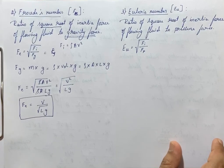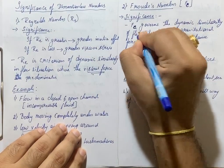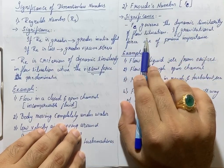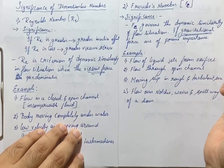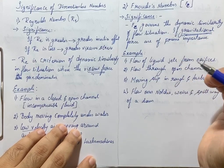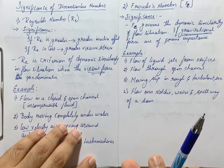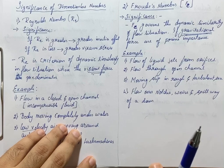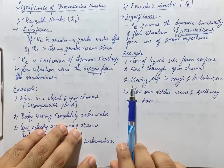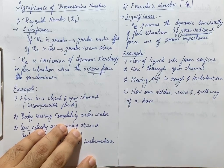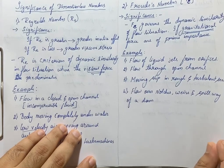Froude number governs dynamic similarity of flow situations where gravitational forces are of prime importance. It is used in: flow of liquid jets from an orifice, flow through open channels, moving ships in rough and turbulent sea, and flow over notches, weirs, and spillways of a dam.